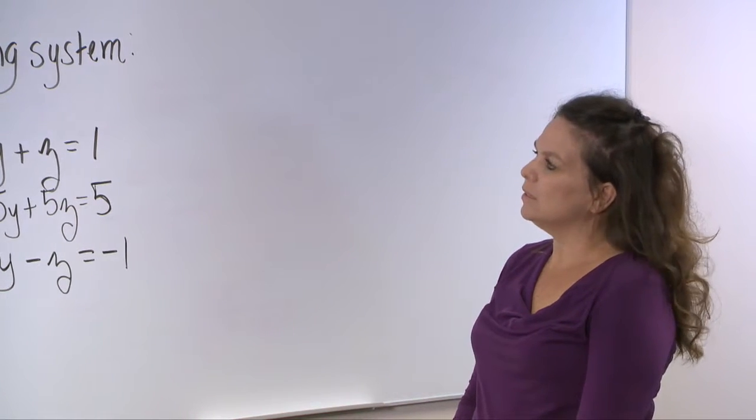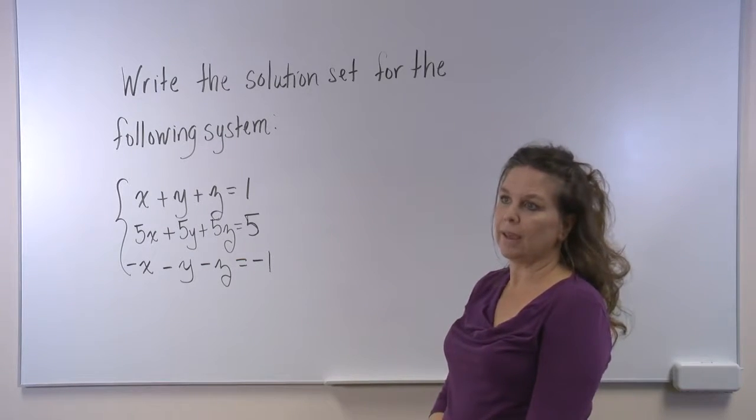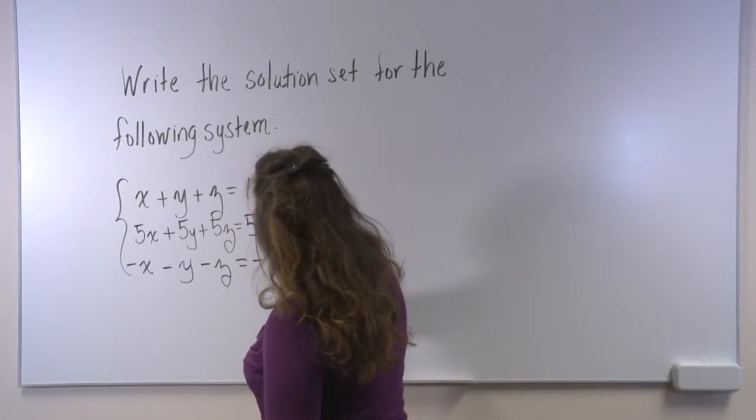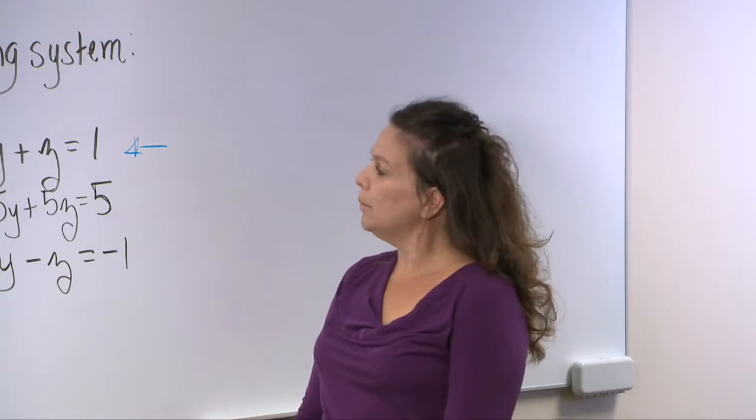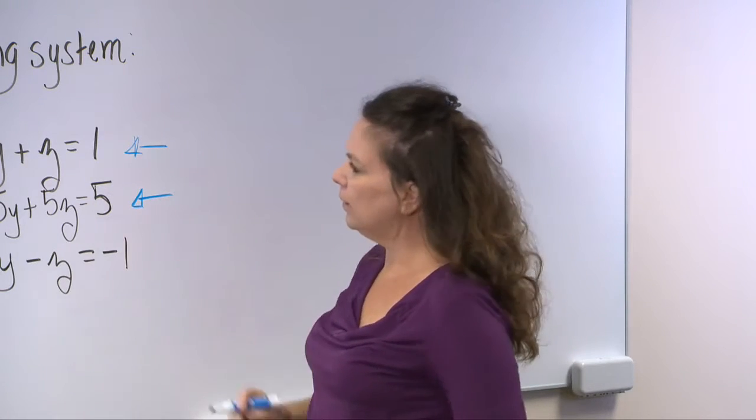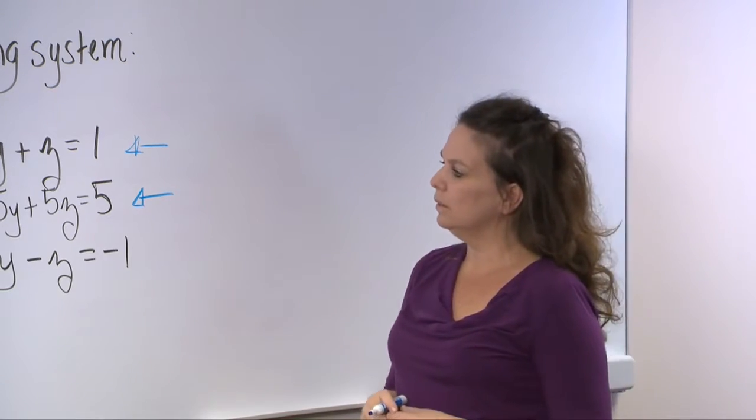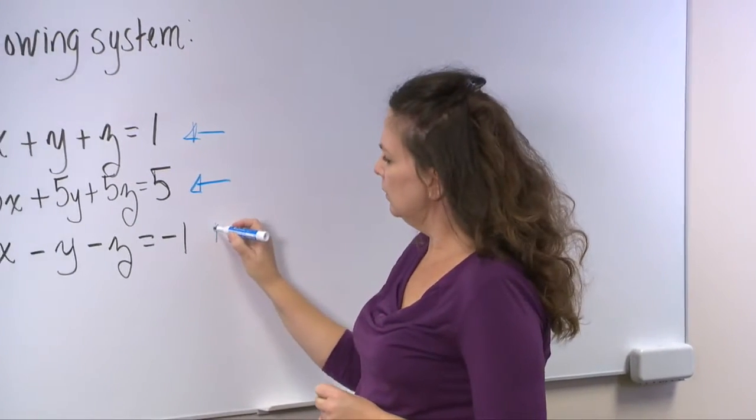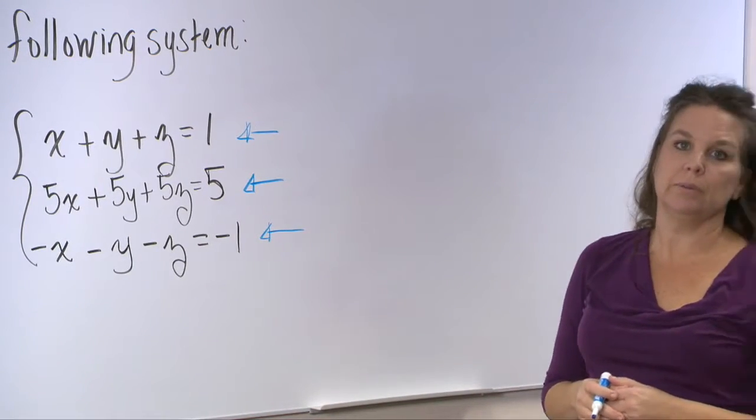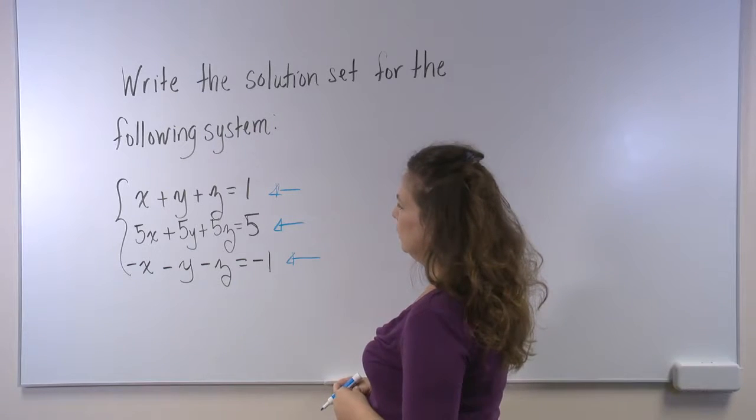Write the solution set for the following system. So here we have a system of three equations and three unknowns. The first equation is x plus y plus z is equal to 1. The second equation is 5x plus 5y plus 5z is equal to 5. The third equation is negative x minus y minus z is equal to negative 1.